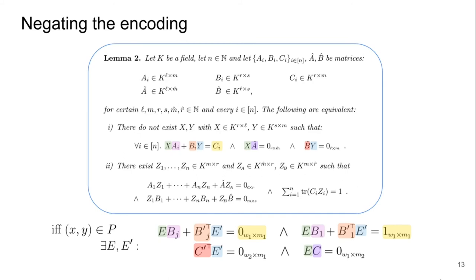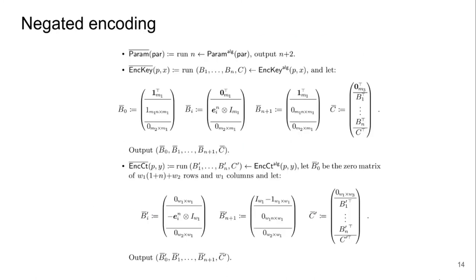Here is the negation transformation. The matrices corresponding to common variables, both in the key and ciphertext encodings, are very sparse — almost all entries are zero except for a few ones.